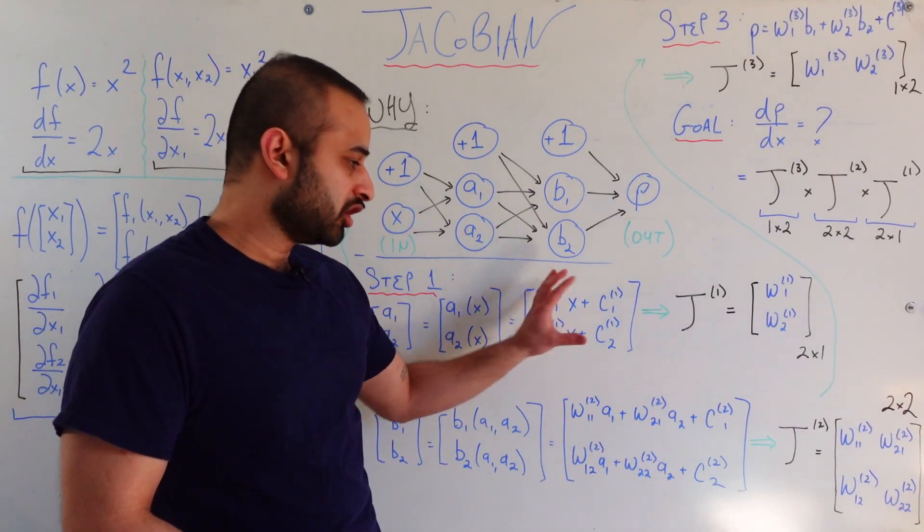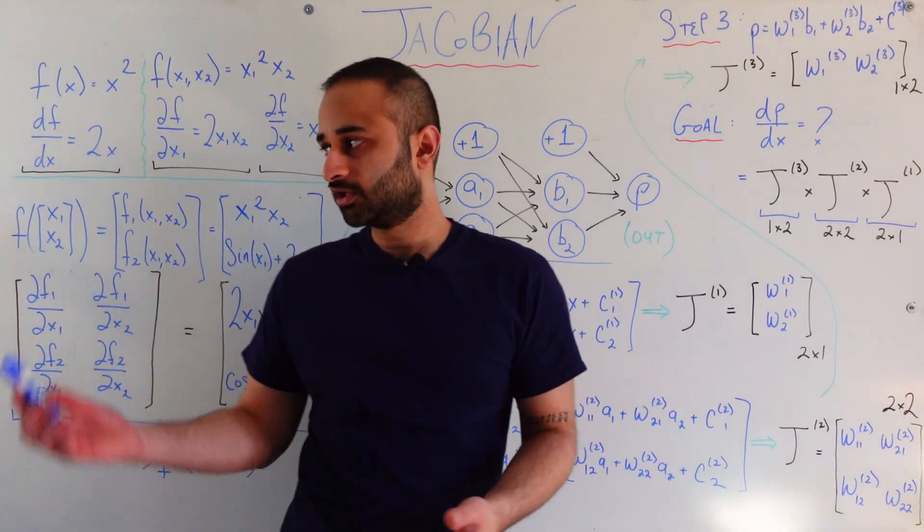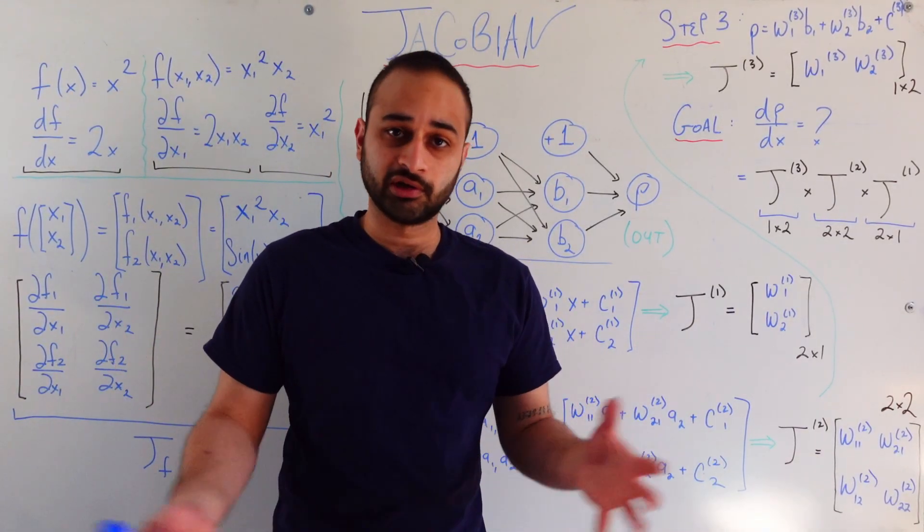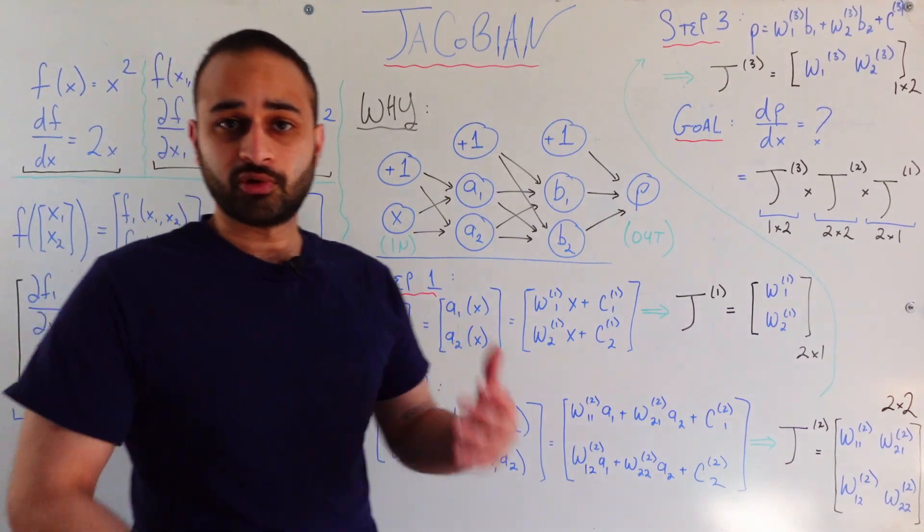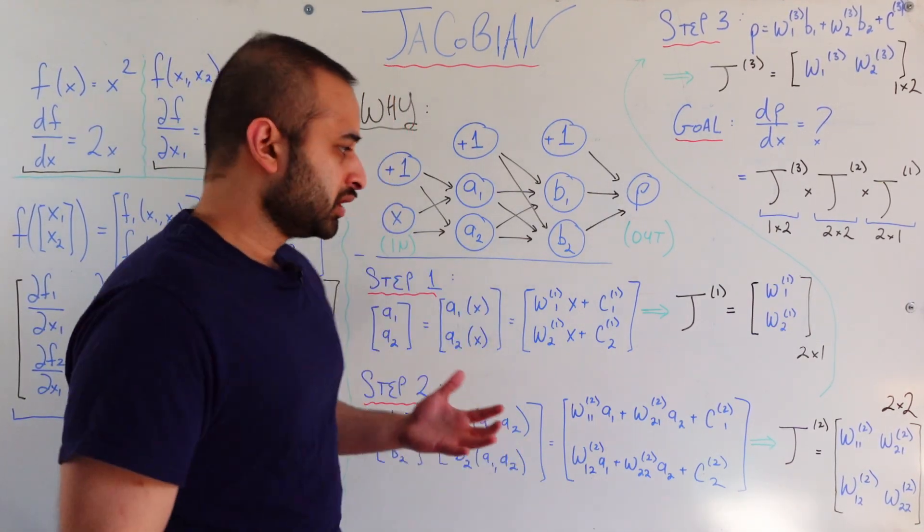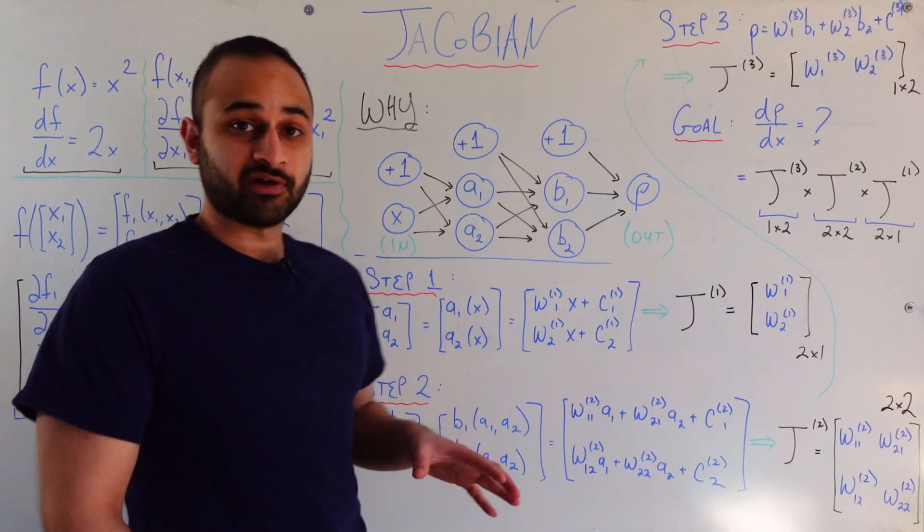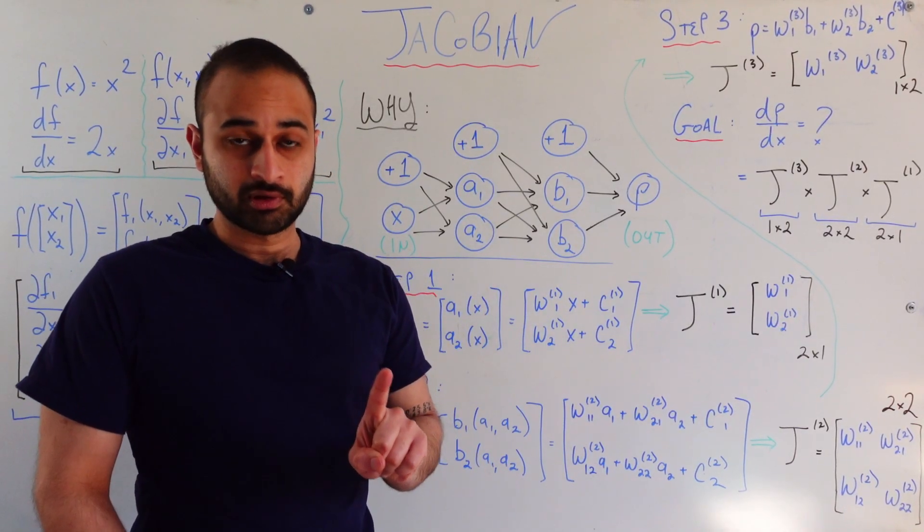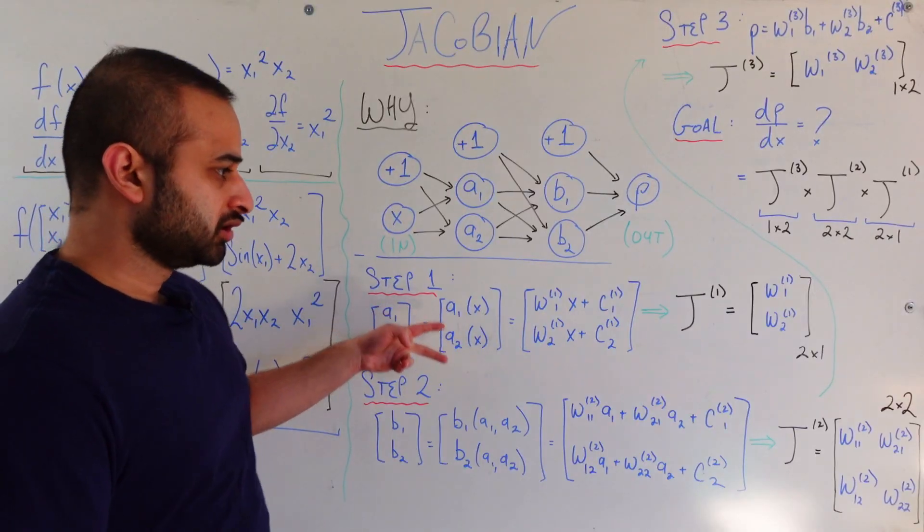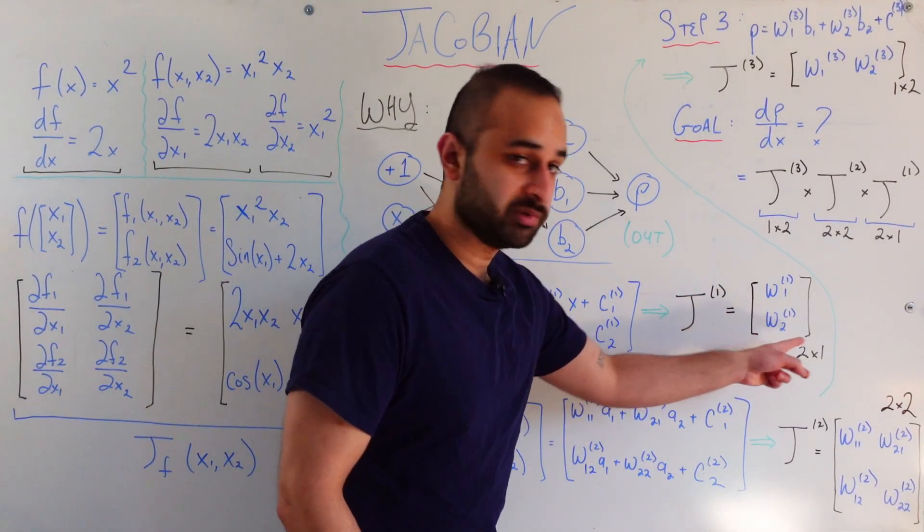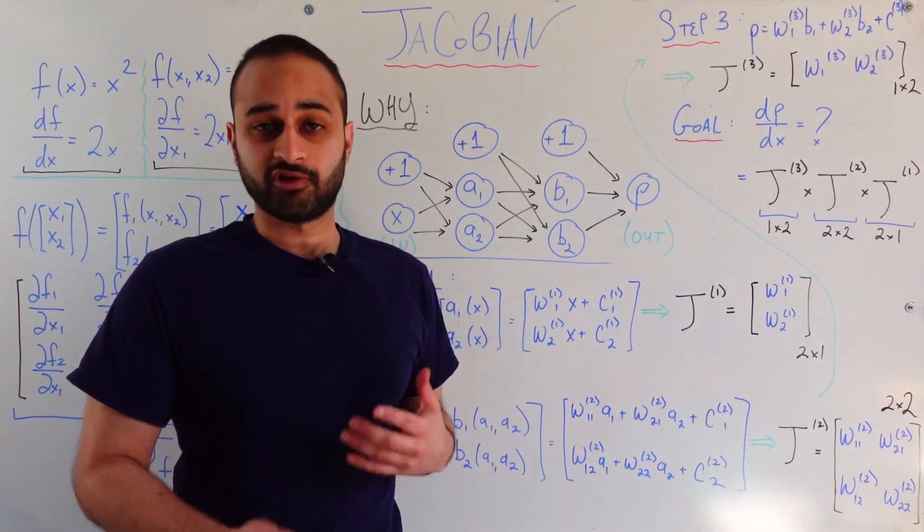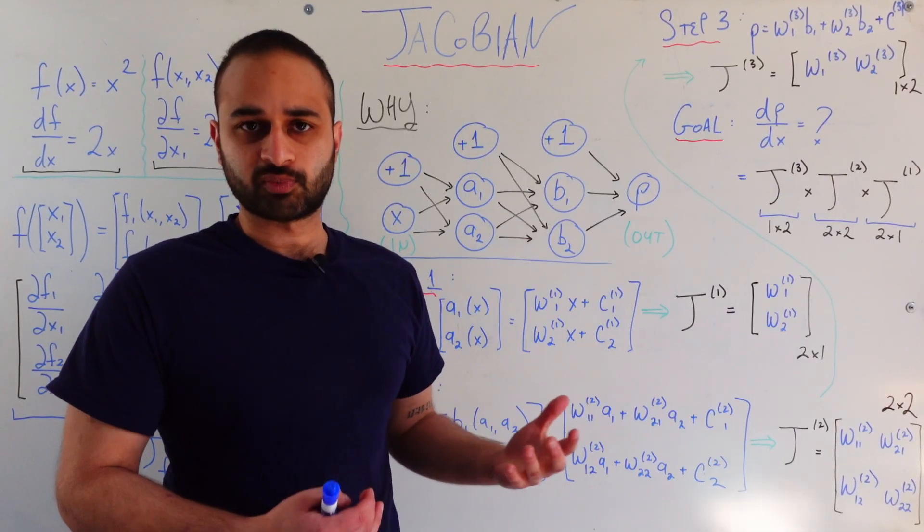Now if I ask you what's the Jacobian of this guy, it's actually even easier than the example we did here because these are all linear functions. But let's go through it explicitly just to be sure. So if I ask you what's the Jacobian of this function here, it's a function of one variable and it has two functions in it. So the Jacobian's dimensions are going to be two by one. It's going to be important to talk about the dimensions of the Jacobian in this process.